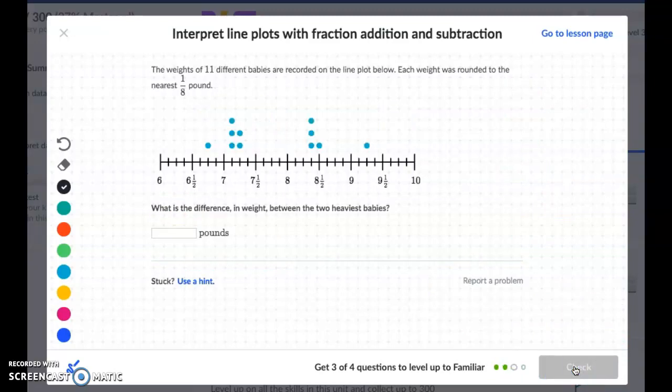The weights of 11 different babies are recorded on the line plot below. Each weight was rounded to the nearest ⅛ of a pound. So when we look at this each of these blue dots is a different baby and how much they weighed. What is the difference in weight between the two heaviest babies? So not the ones where you have the most weighing that amount. It's the heaviest.